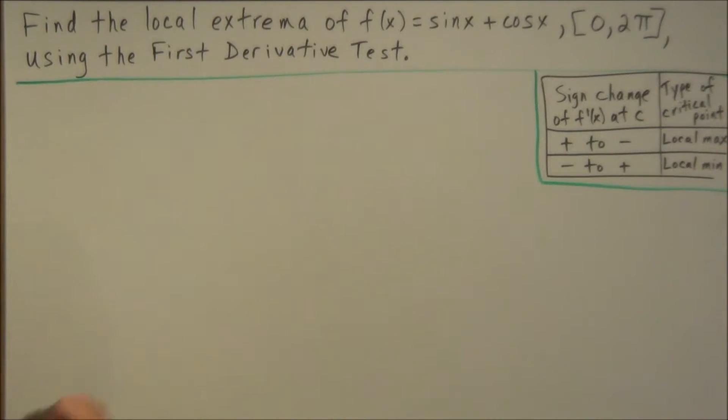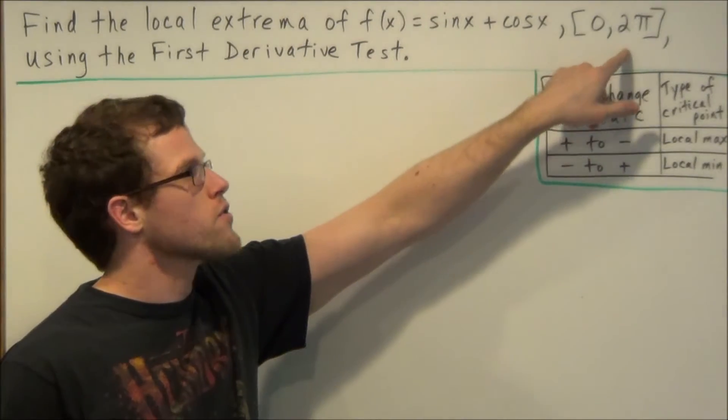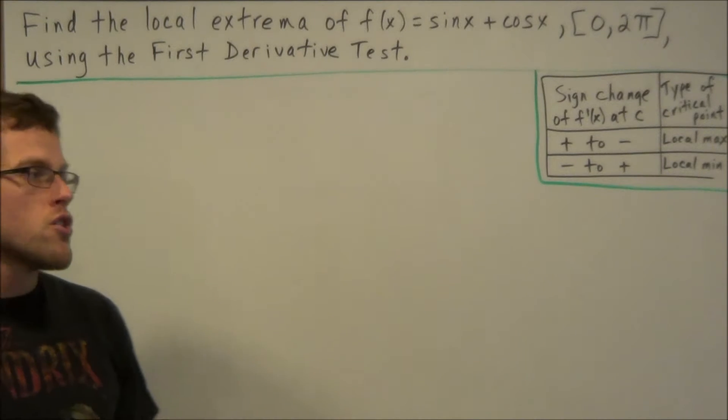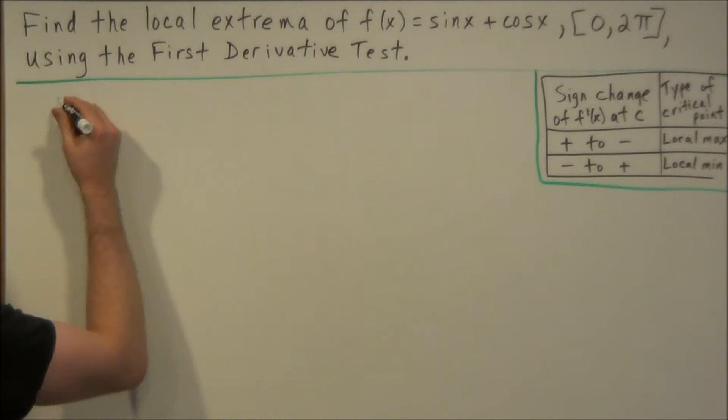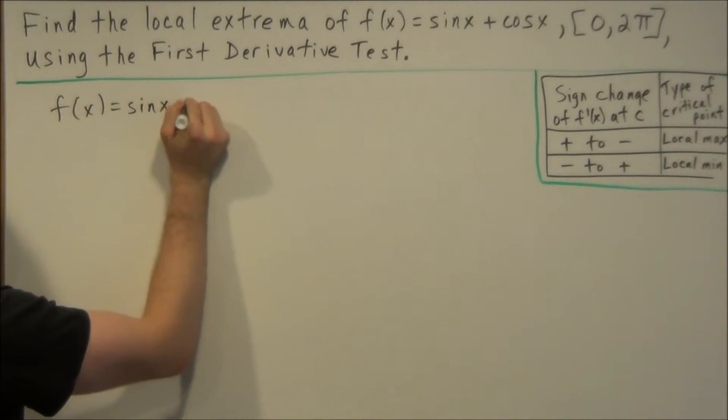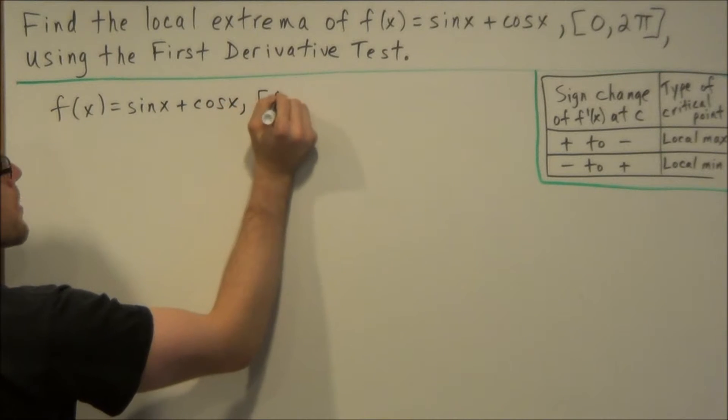We have find the local extrema of f(x) equals sine x plus cosine x on the interval from 0 to 2π using the first derivative test. So for this example here, we're starting off with f(x) equals sine x plus cosine x on the interval from 0 to 2π.